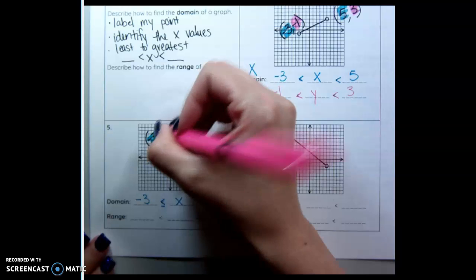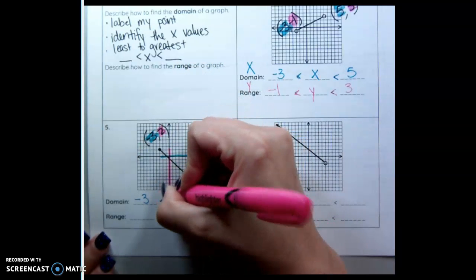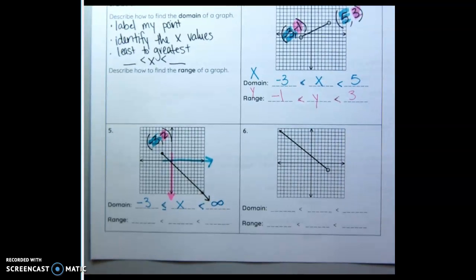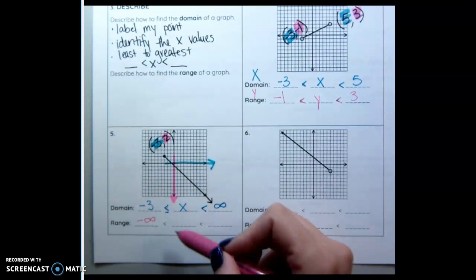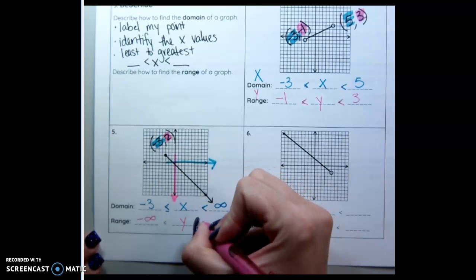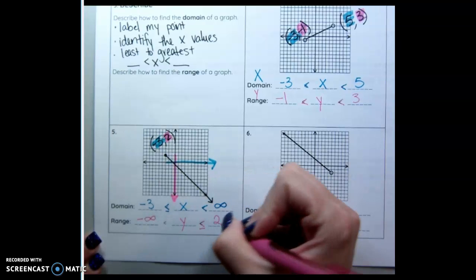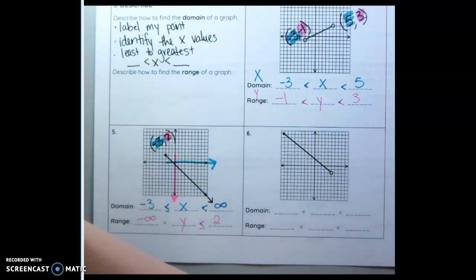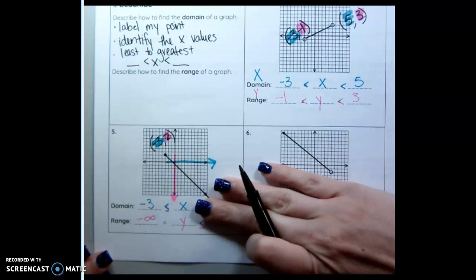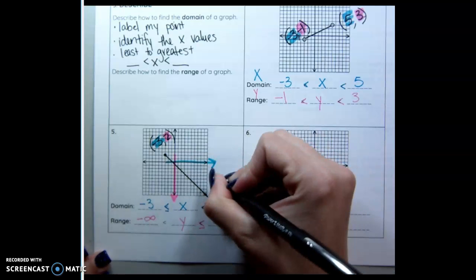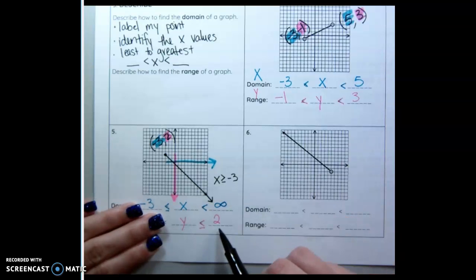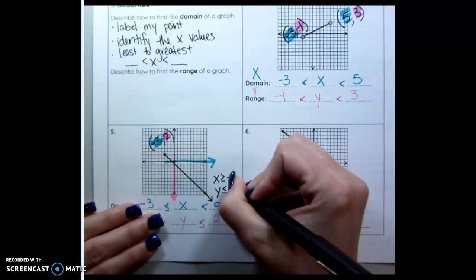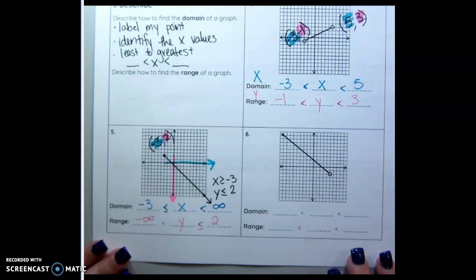And then this is my y value. And this one's going down forever. So what we call going down forever is getting more negative forever and ever. We call that negative infinity. You cannot contain infinity. And the highest it will go is 2. So we can write these in a simplified way. That's how you'll see them on the STAAR. You pretend that the infinity part is not there. So the domain would be x is greater than or equal to negative 3. And my y is less than or equal to 2.